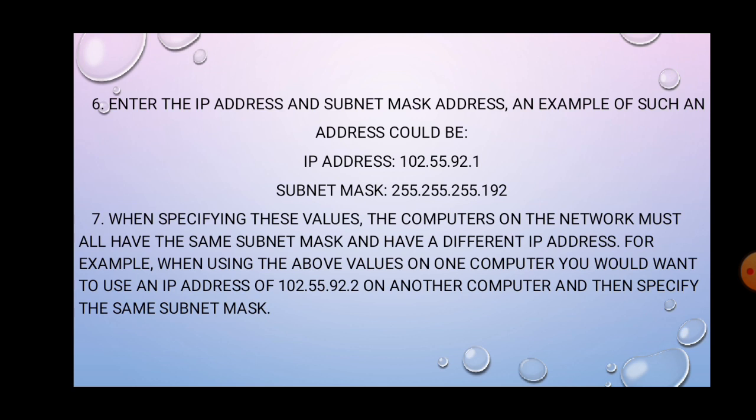An example of such an address could be IP address 192.55.92.1, subnet mask 255.255.255.192. When specifying these values, the computers on the network must all have the same subnet mask and have a different IP address. For example, when using the above values on one computer, you would want to use an IP address of 192.55.92.2 on another computer and then specify the same subnet mask.